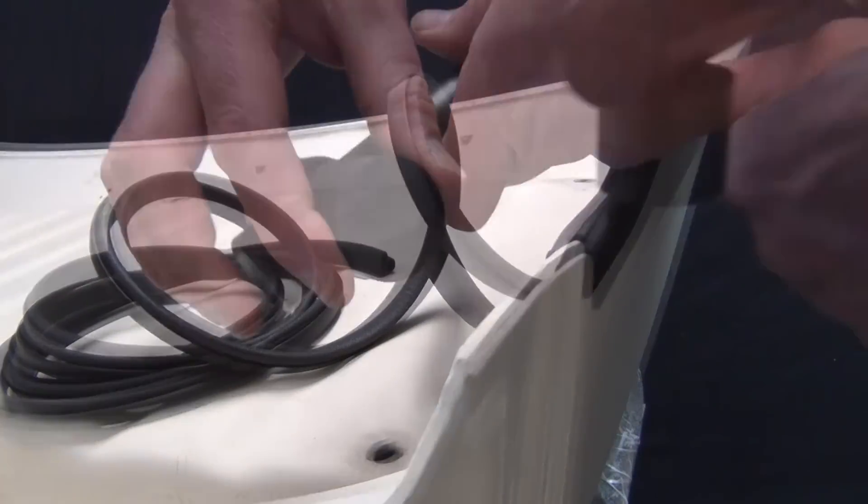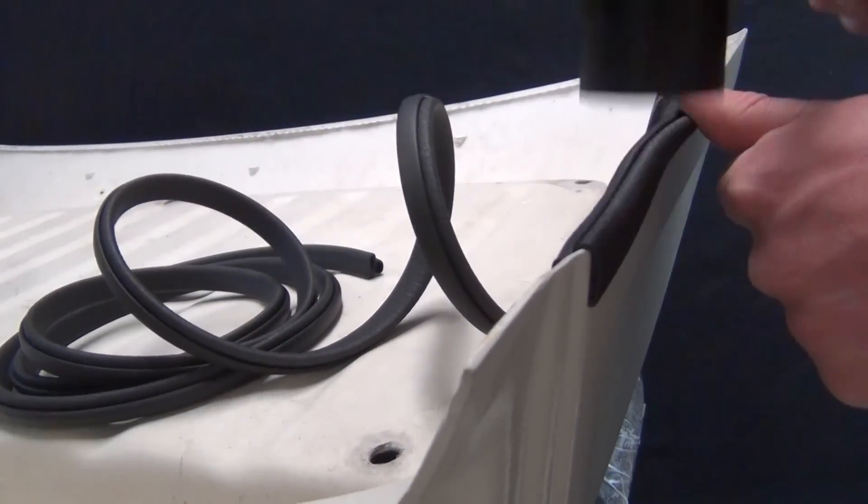I use a soft-faced rubber mallet to tap the seal on and fully seat it onto the rack edge. Work around the corners and all the way along the perimeter of the rack the same way until reaching the opposite side of where you started.